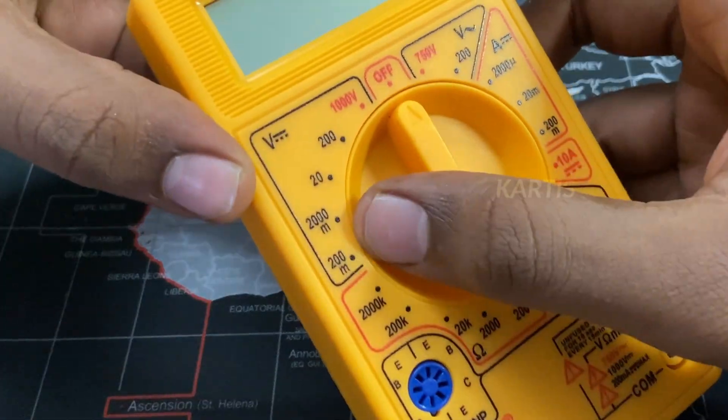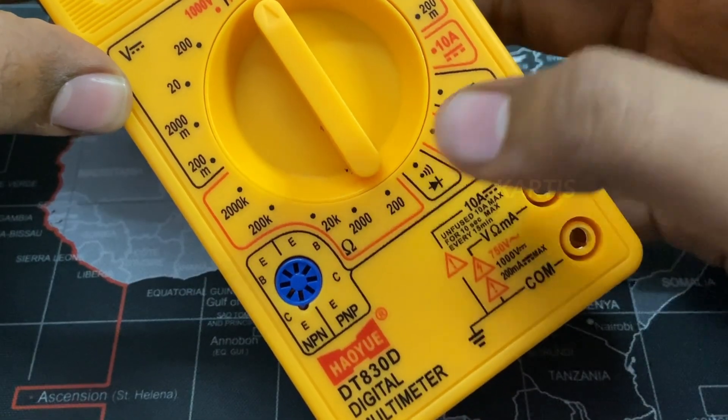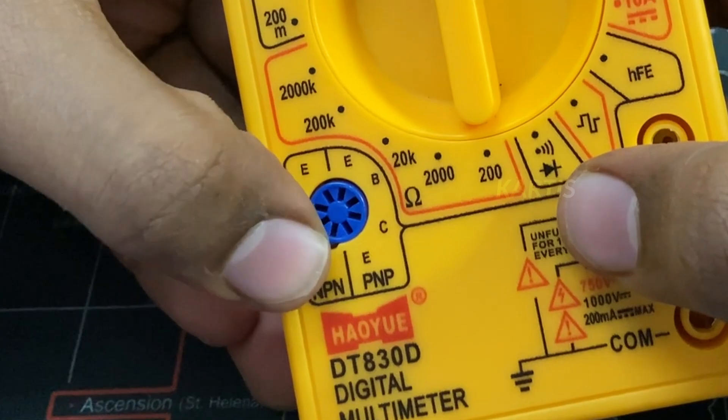Guys, this is the multimeter. This is the voltage, current, resistance, continuity. We can also check transistors as well.